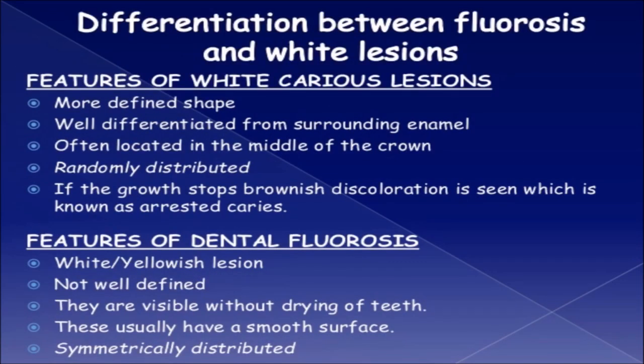Differentiation between fluorosis and white lesions: Features of white carious lesions include more defined shape, well differentiated from surrounding enamel, often located in the middle of the crown, and randomly distributed; if growth stops, brownish discoloration known as arrested caries is seen. Features of dental fluorosis include white to yellowish lesions that are not well defined, visible without drying of teeth, with a smooth surface, and symmetrically distributed.